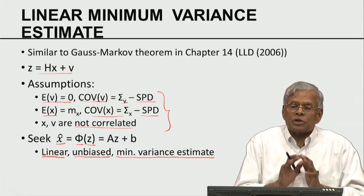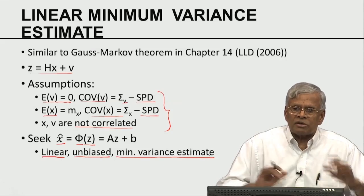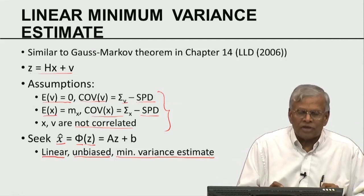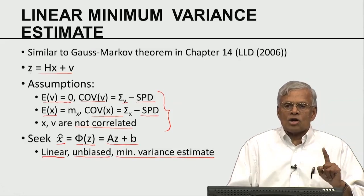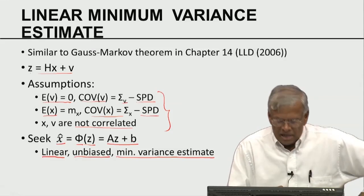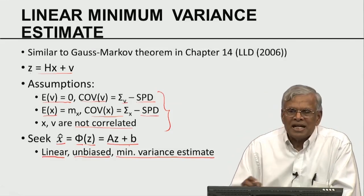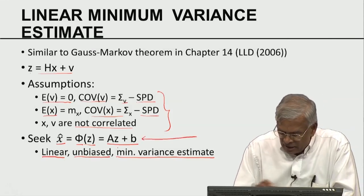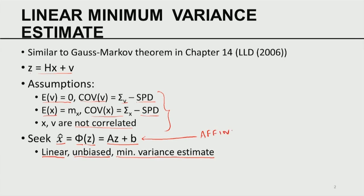Here we are going to start by explicitly talking about the structure of the estimate. Let the estimate x̂ be linearly dependent on z: x̂ = φ(z) = Az + b. Such functions are not called linear — they are called affine. If b = 0 it is linear; if b ≠ 0 it has a linear term plus a constant term. But we call such a structure linear for simplicity. The estimate has a linear structure and I would like this estimate to be unbiased and minimum variance.